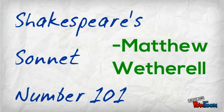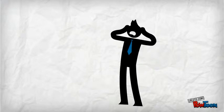Hi, I'm Matthew Wetherell. Today, I'm going to quickly discuss Shakespeare's Sonnet 101, in which he has a one-sided argument with his muse about the qualities of truth and beauty.